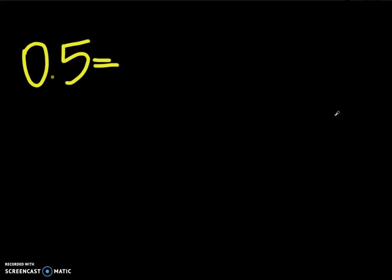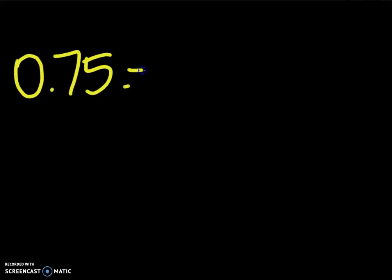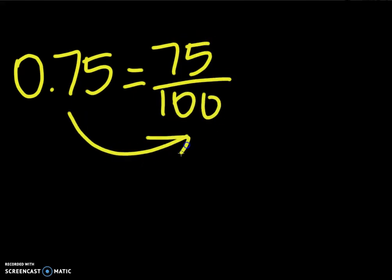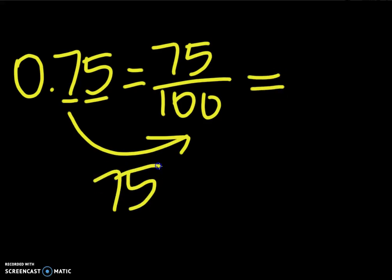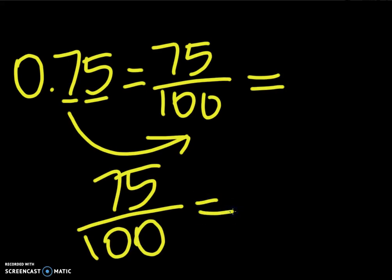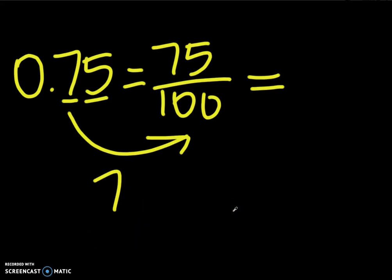Next, let's try a different, more complex example: 0.75. 0.75 is also 75 over 100. When you interchange a decimal to a fraction, you count how many decimal places there are. Since there are two decimal places, the denominator is 100. Also, as a percentage — the 'cent' in percentage tells us it's over 100 — and since we already have it over 100, that gives us 75%.